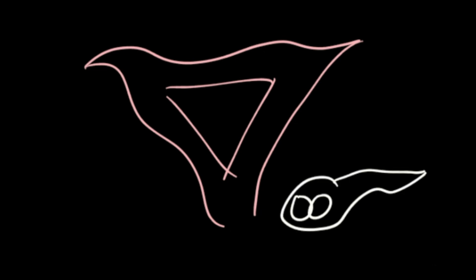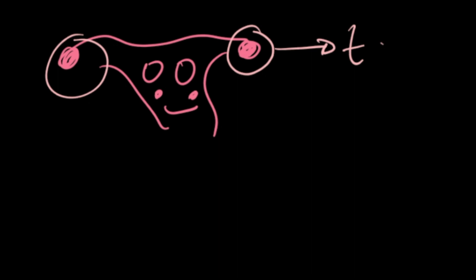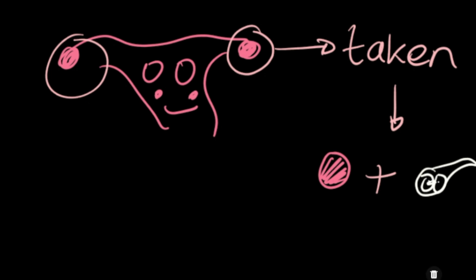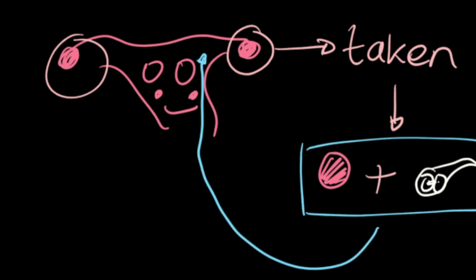There are several types of ART, such as intrauterine insemination or IUI, which involves placing sperm inside a woman's uterus to facilitate fertilization. The second type is gamete intrafallopian transfer or GIFT, which removes the egg from the ovaries and places it in the fallopian tubes along with the male sperm.